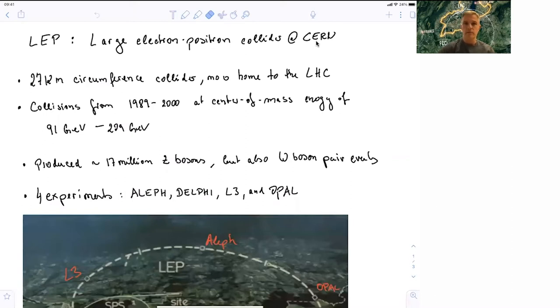LEP, the Large Electron-Positron Collider, was a collider which was operated in the late 1980s up to the year 2000 at center of mass energies from 91 GeV up to 209 GeV. These energies were used to probe the Z boson, to produce pairs of W bosons, and also to look for the Higgs boson, which didn't quite work because this energy wasn't quite sufficient.